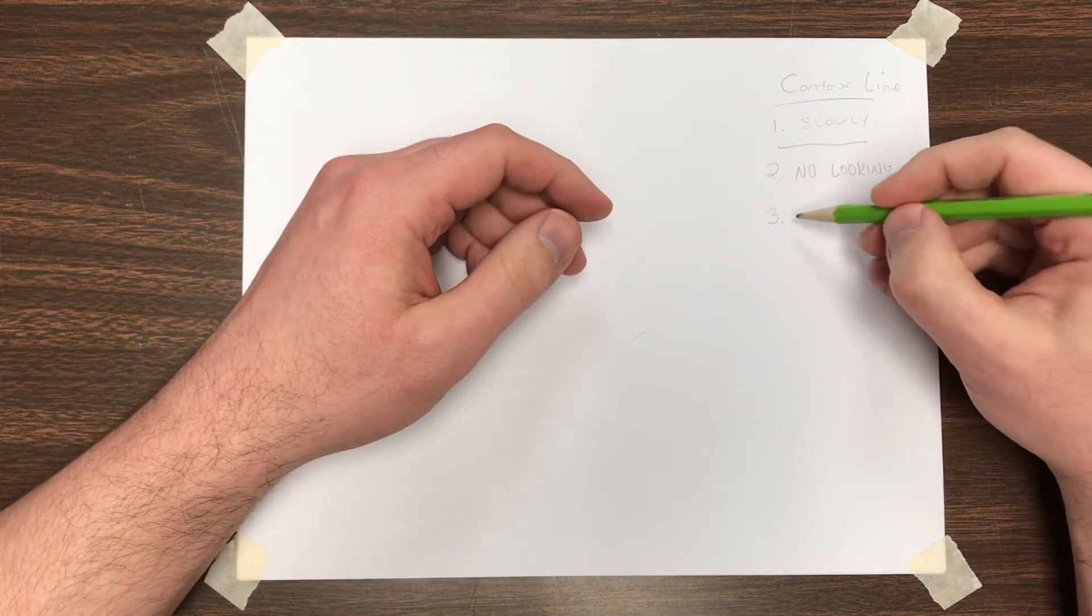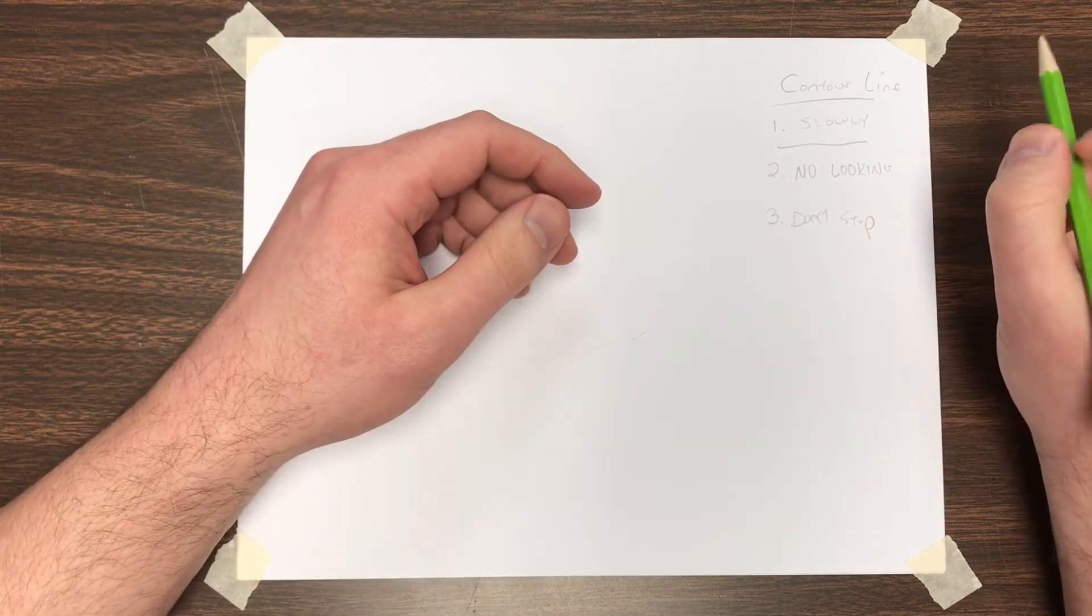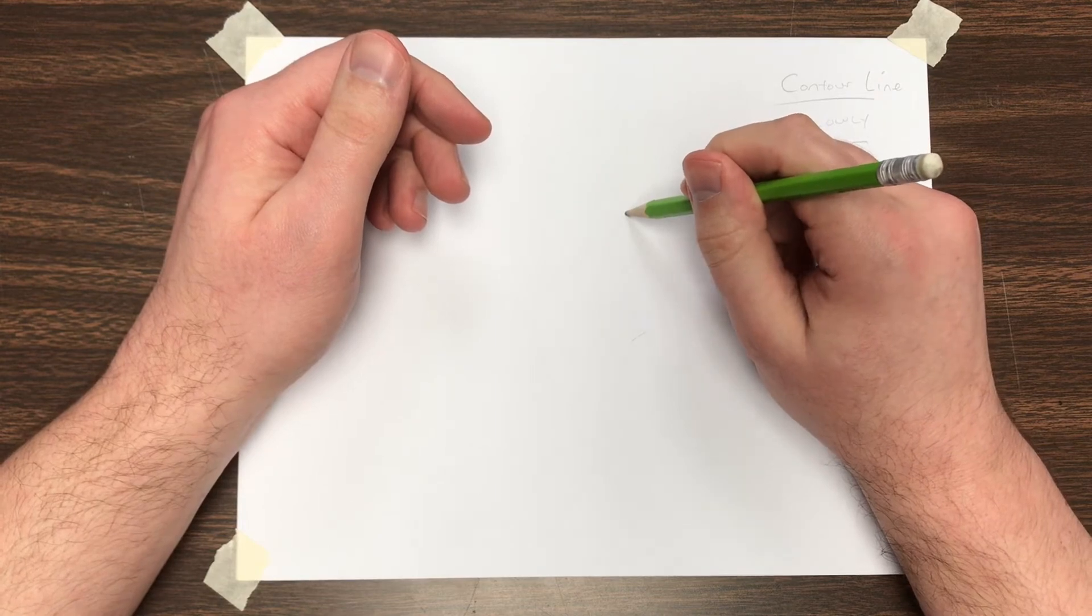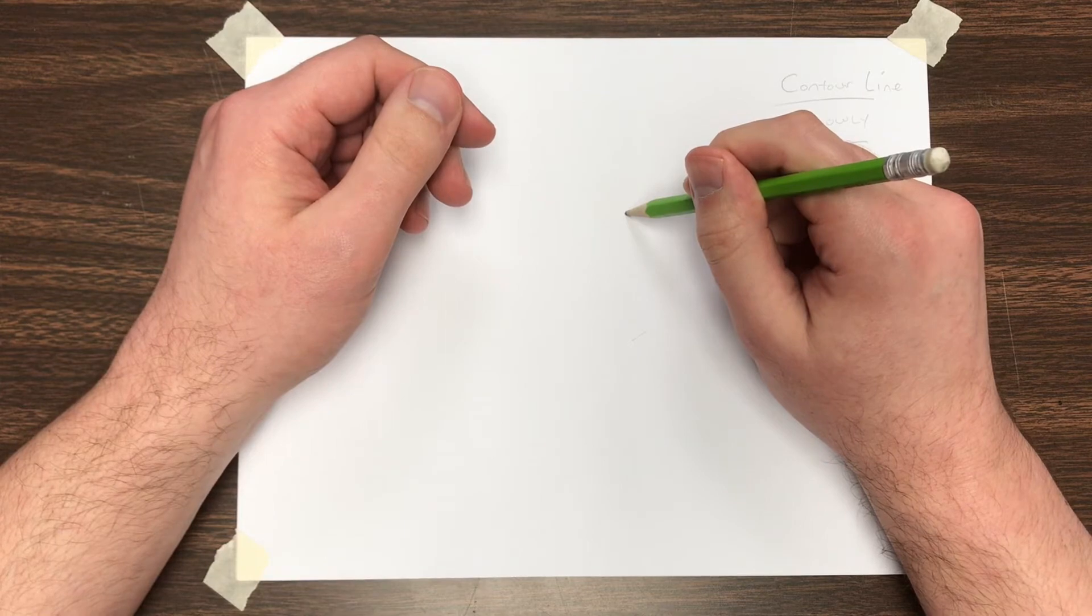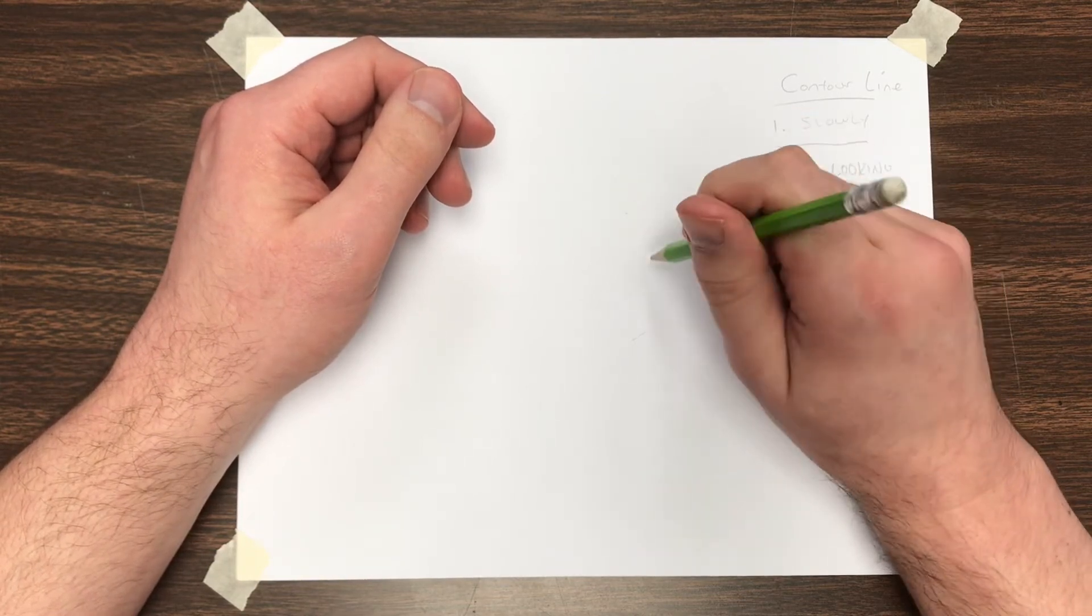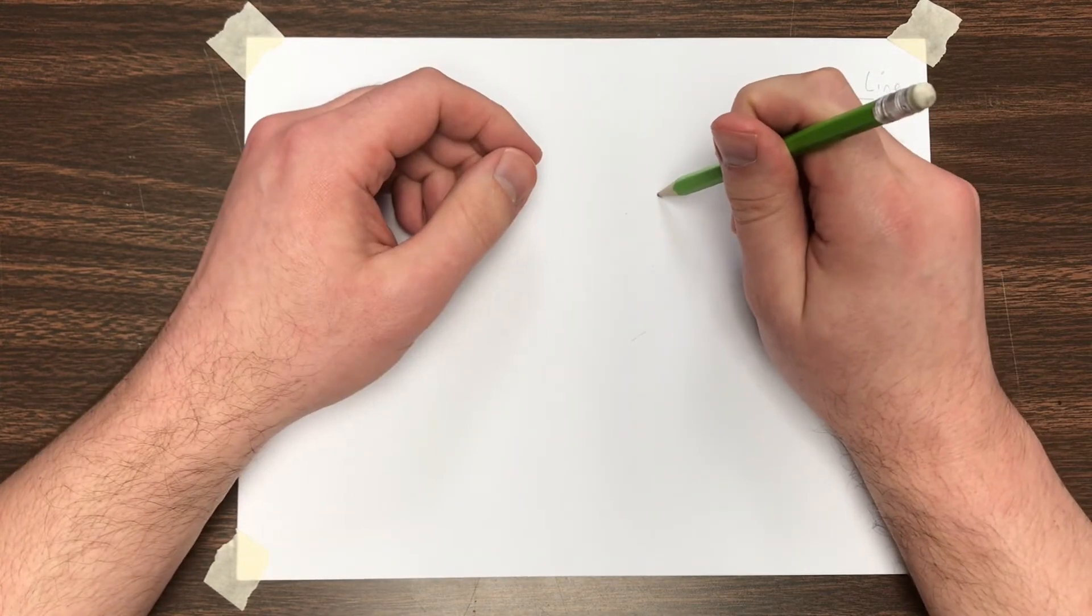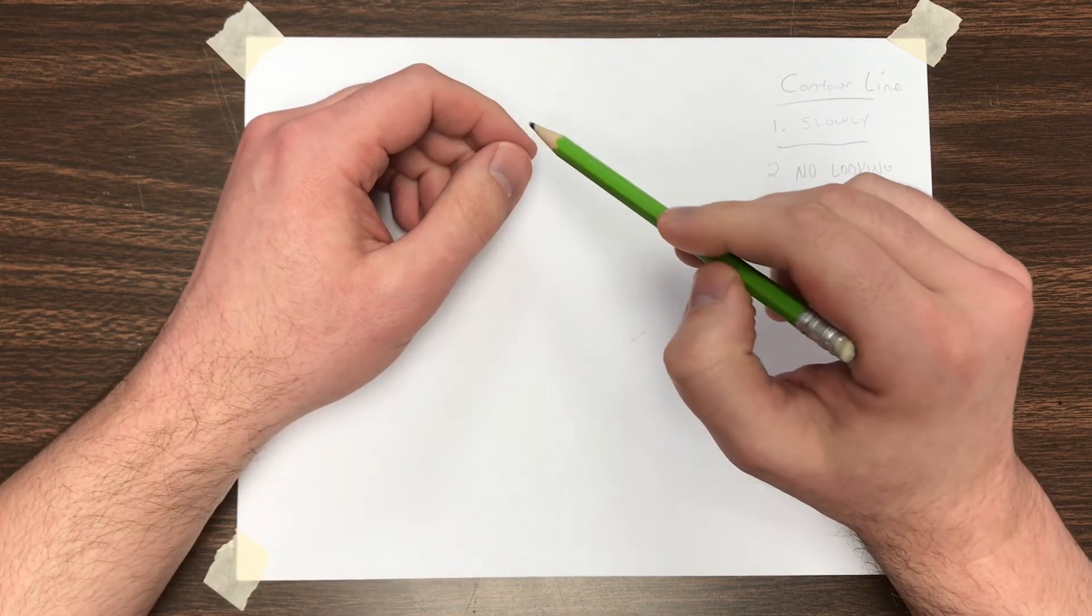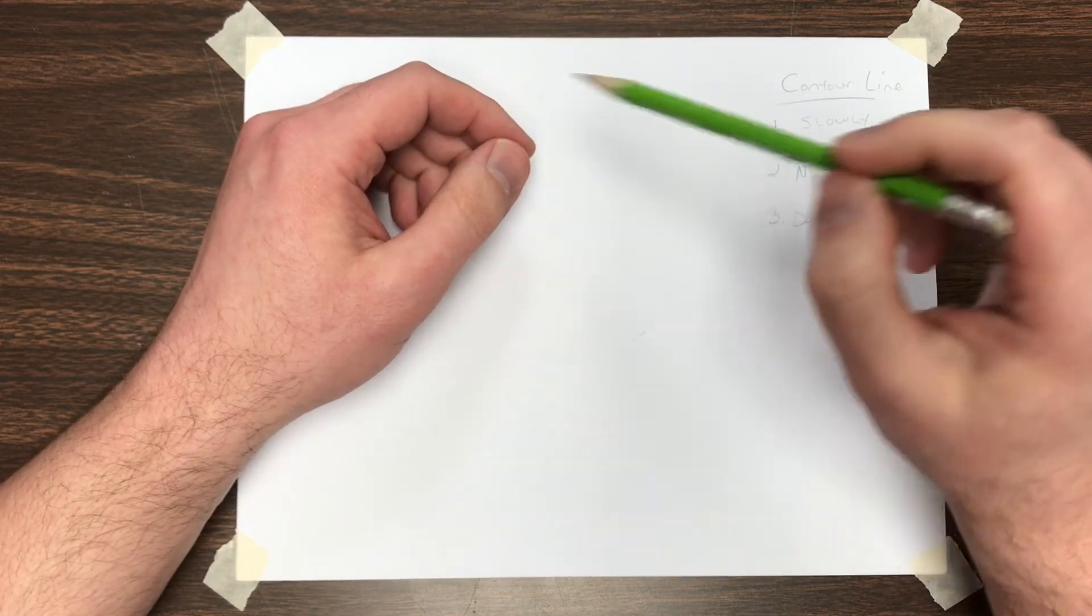And number three, don't stop. Throughout the whole drawing, your pencil will be on the paper. You're never going to lift the pencil off the page for the whole five minutes. So not until that timer goes off can you lift up the pencil. Not until the timer goes off can you look at the paper. The reason my pencil is going to stay on the page is because my eye is going to stay on my hand. And wherever my eye goes, that's where my pencil should be going. So think of them as being connected.